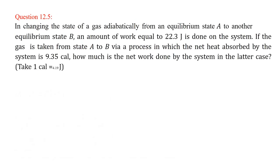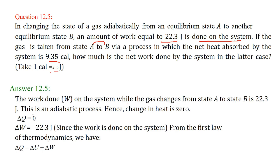In changing the state of a gas adiabatically from equilibrium state A to another state B, the amount of work equal to 22.3 joules is done on the system — note, work is done on the system, not by the system. If the gas is taken from state A to B via a process in which the net heat absorbed by the system is 9.35 calorie, how much is the net work done by the system in the latter case? Take 1 calorie as 4.19 joules. In the adiabatic case, delta Q is 0, delta W is minus 22.3 joules (minus because work is done on the system, not by it).